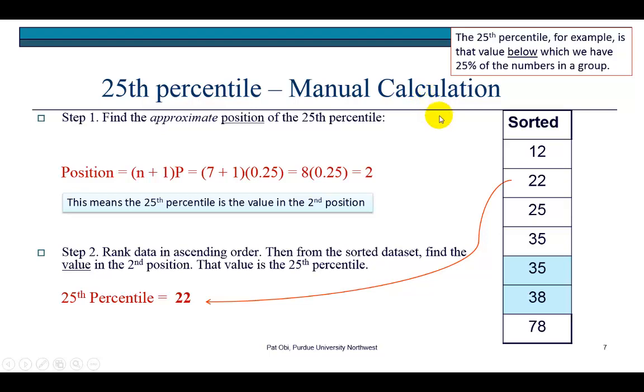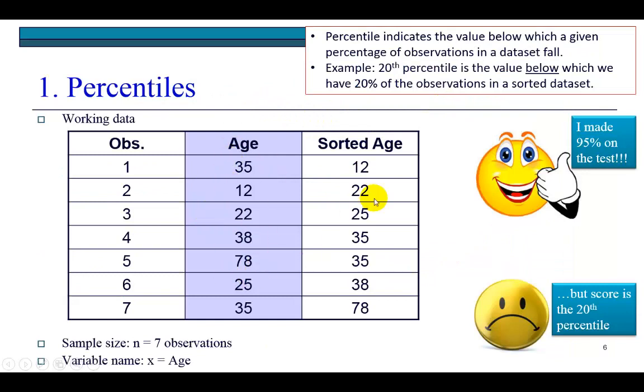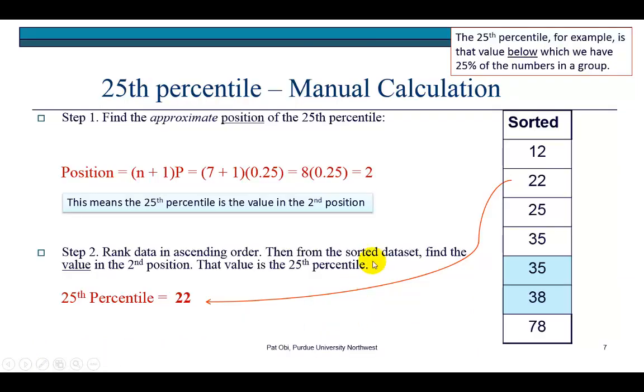First we take these observations and sort them from the smallest, youngest person's age to the oldest person's age. The first step is to find the position where that 25th percentile lies. This is the approximation formula: sample size plus one multiplied by the percentile. So we have seven observations, that's eight multiplied by 0.25, which comes out to two. This tells us the 25th percentile observation is the value in the second position.